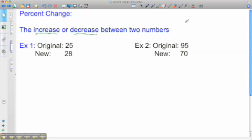The general formula is percent over 100 equals the difference, how much it changed by, over the original or starting amount.